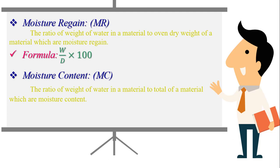The ratio of the weight of water in a material to the total weight of the material is moisture content. The formula for moisture content is W divided by W plus D into 100.